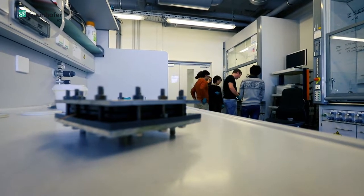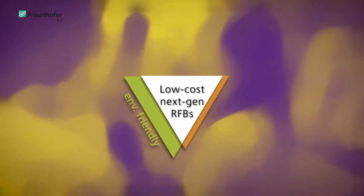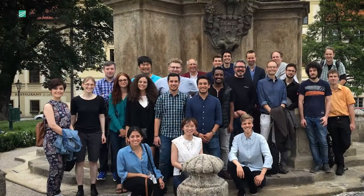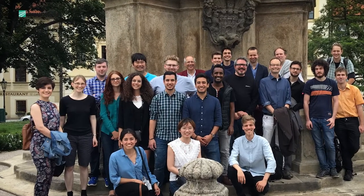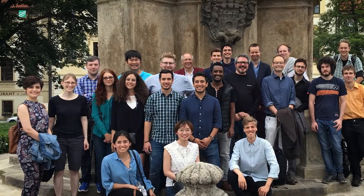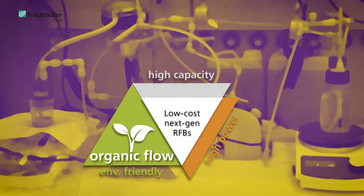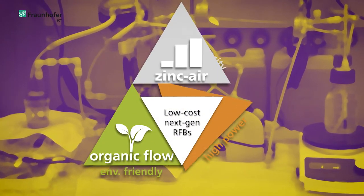Flowcamp is a European trading network for researchers in the field of next-generation redox flow batteries. It consists of the work of 15 PhD students on three different redox flow battery systems: organic flow batteries, zinc air, and hydrogen bromine.